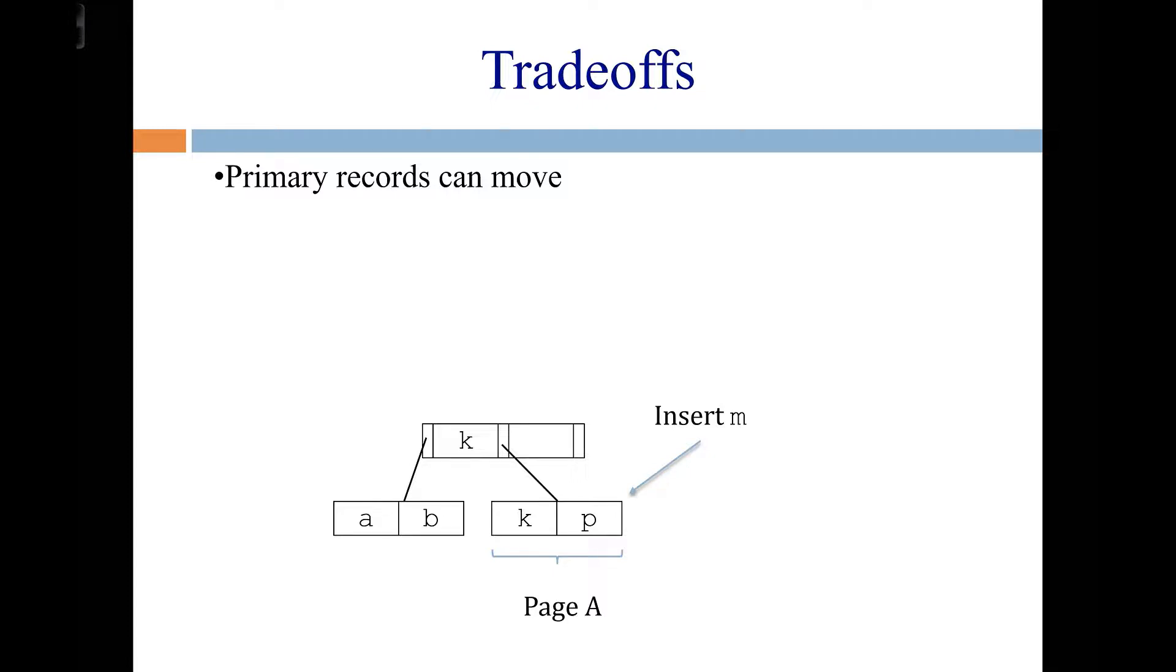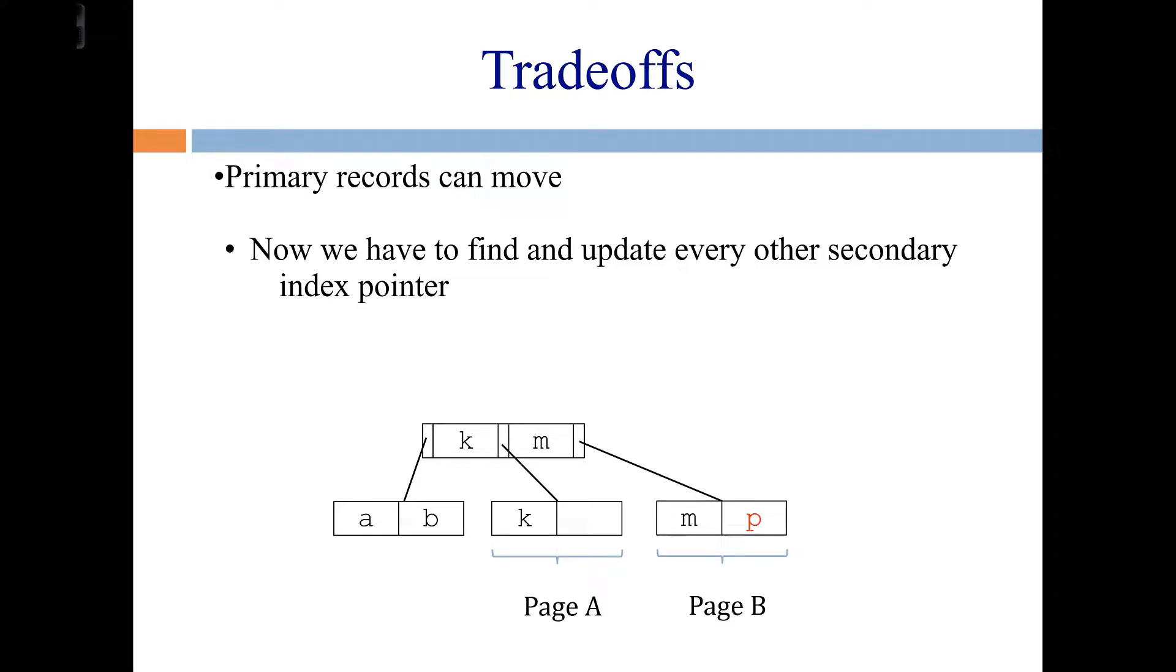The way it will actually end up is looking like this. The P will move over into a new page, and we'll put the M also into the new page. So K got to stay where it was in page A, but P had to move to page B. So that means if we were just storing direct file pointers from secondary indexes into that spot right there for anything that was looking for the row with primary key of P, any of those secondary indexes now have to go and be updated to point to that location on disk now.